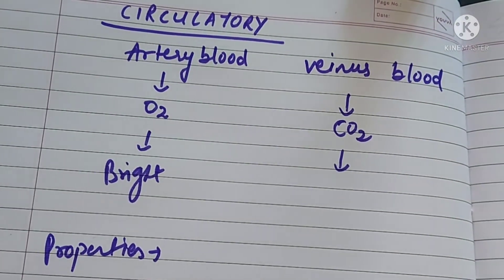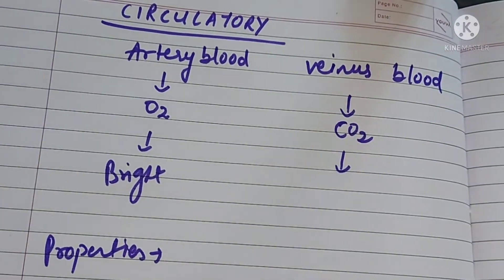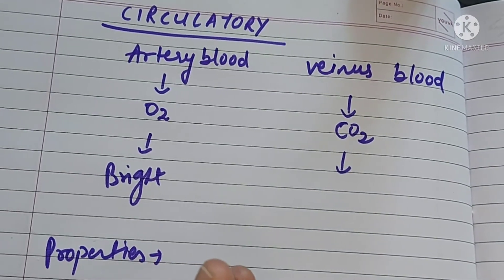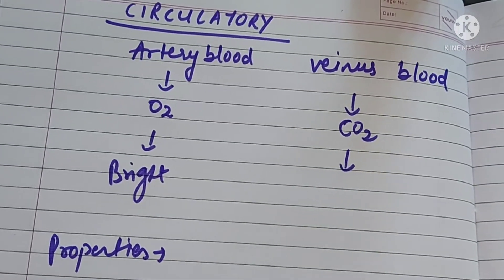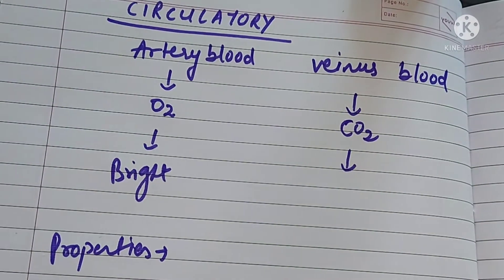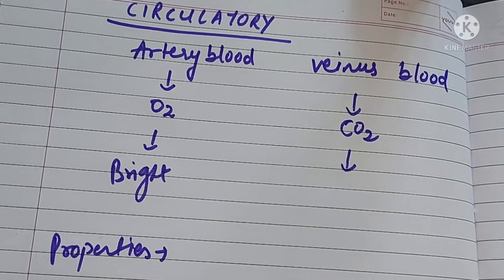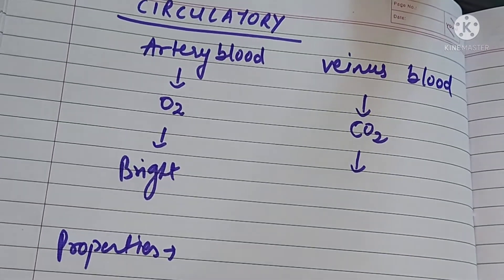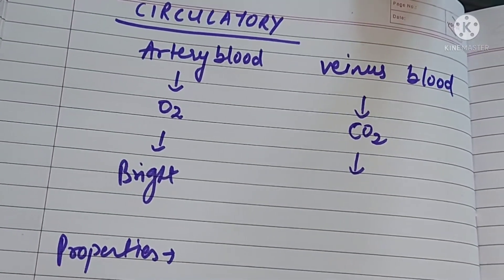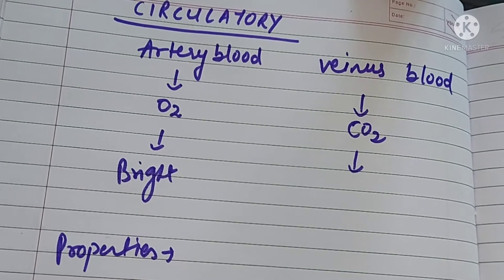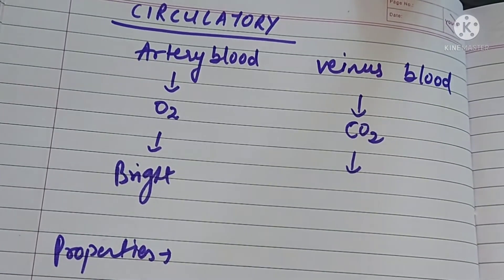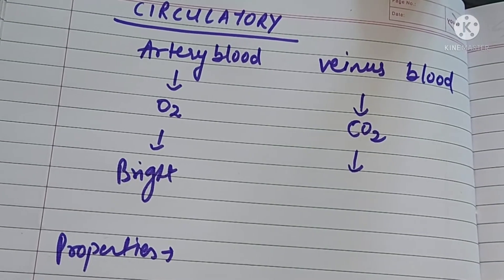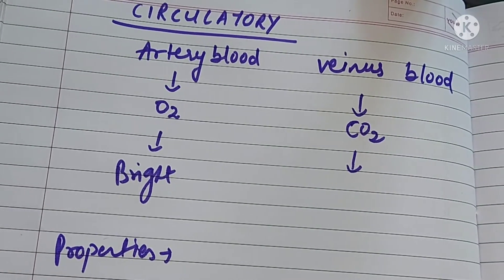First, we start with the difference between arterial blood and venous blood. The arterial blood carries oxygenated blood — it carries oxygen. The venous blood carries deoxygenated blood, that means it carries carbon dioxide. If you see the color of the arterial blood, that is a bright red color, and the venous blood is a dark red color. These are the differences between arterial blood and venous blood.